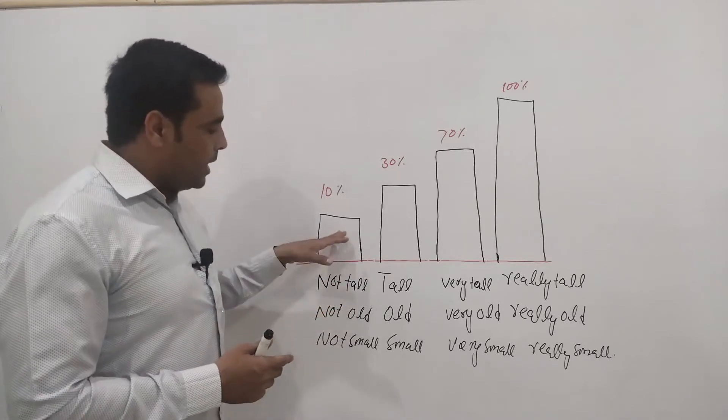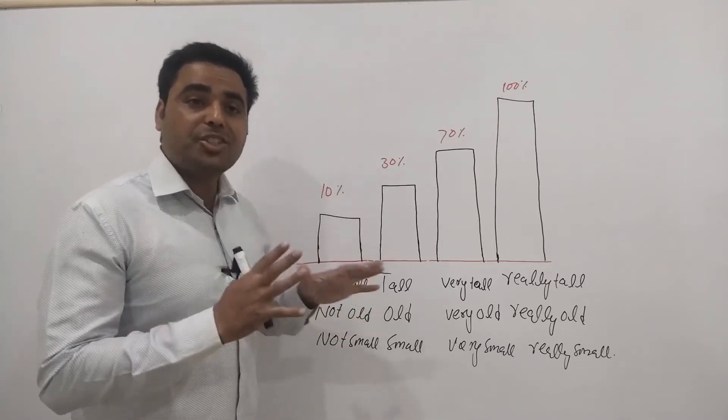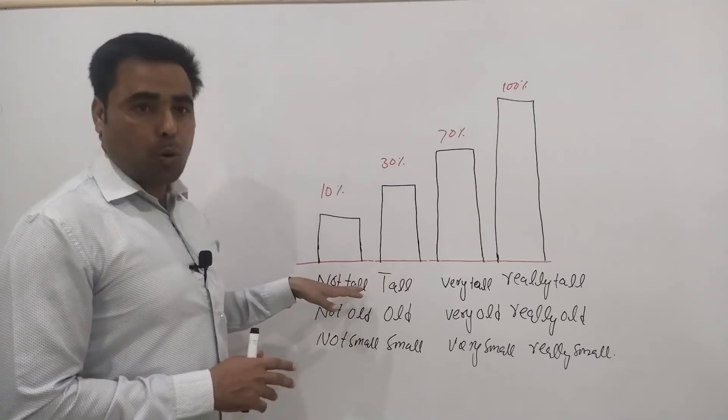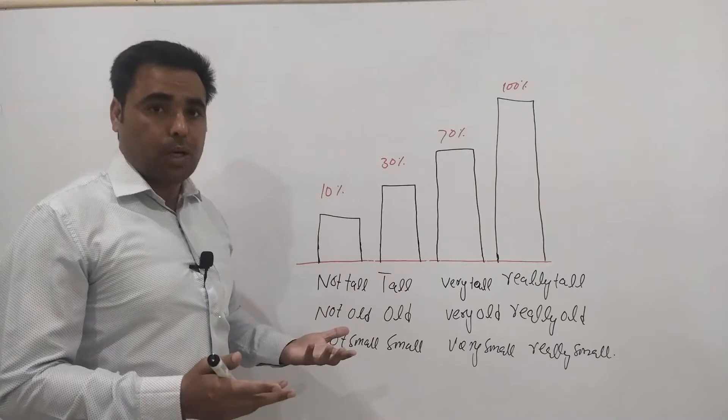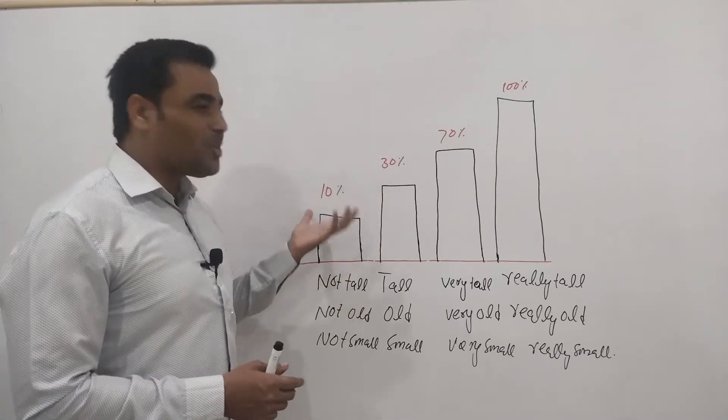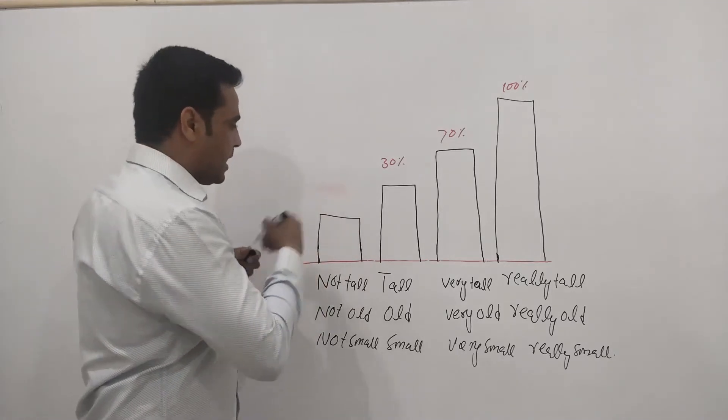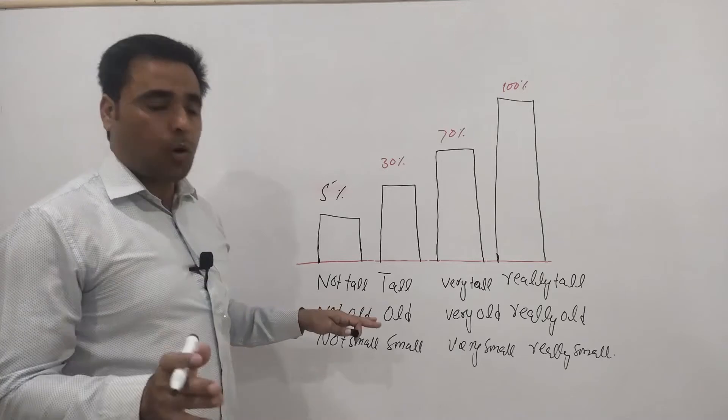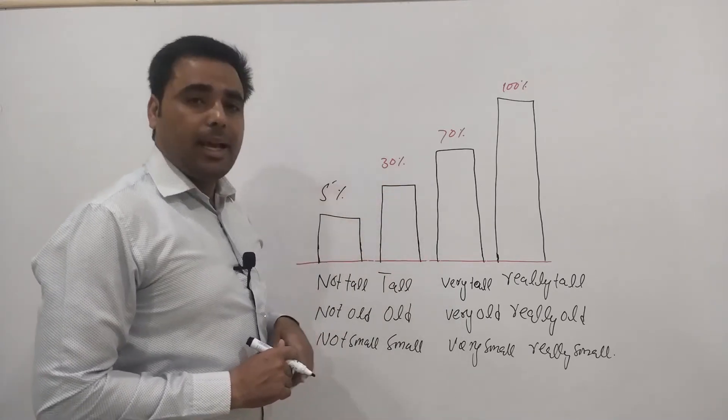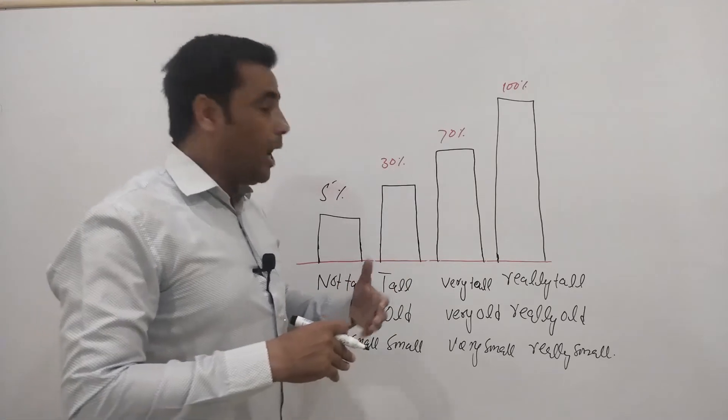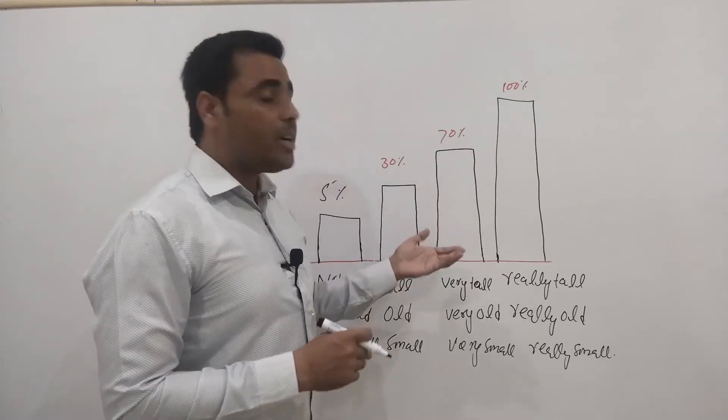First of all, let's say this building, and you are going to talk about that height. You are talking about tall as an adjective. If it's not tall, we can say it's 10%, or you can even lower its percentage such as 5%. So this will be not tall. Then if the height is a bit more, it's tall, which is 30%. Then the height is even more, so it's very tall. This building is very tall, so it will be 70%.